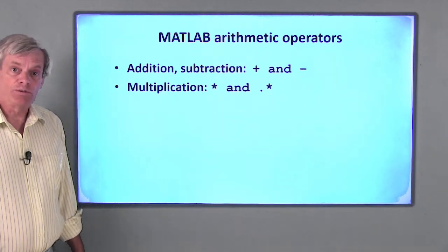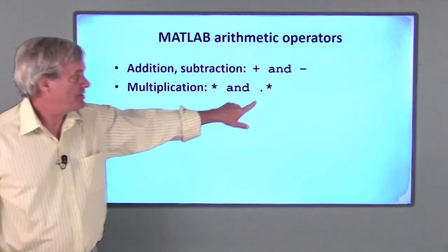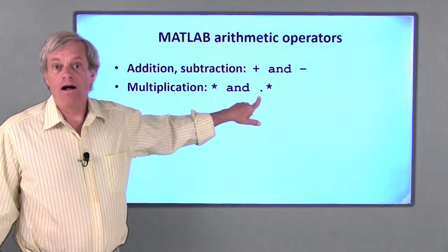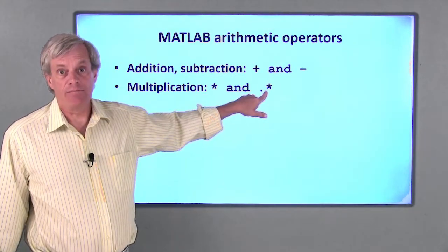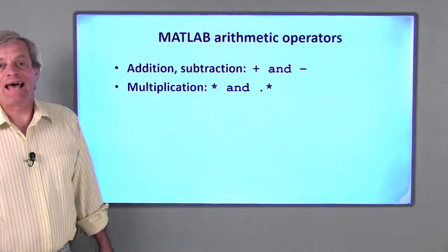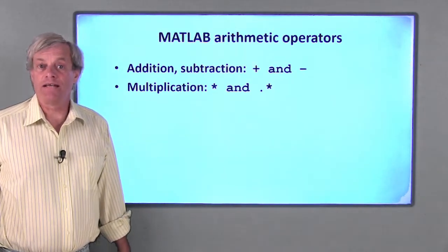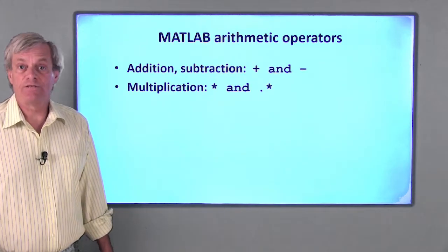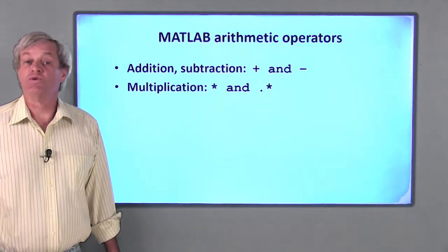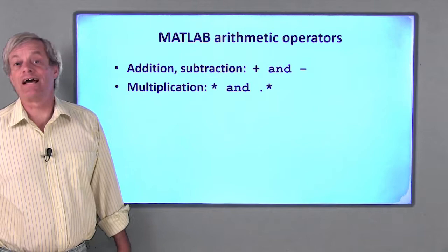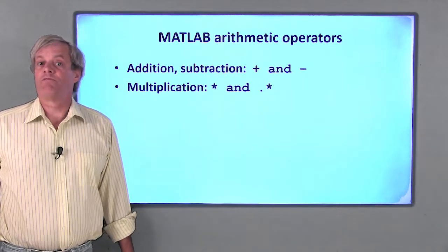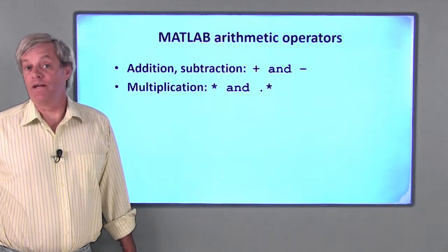There are two multiplication operators: an asterisk and an asterisk with a period in front of it. I'll call these times and dot times. These two operators do exactly the same thing if applied to scalars. However, if the operands are arrays, there's a big difference. So don't get into the habit of thinking they're the same thing. We'll see they're very different once we start dealing with arrays and matrices.